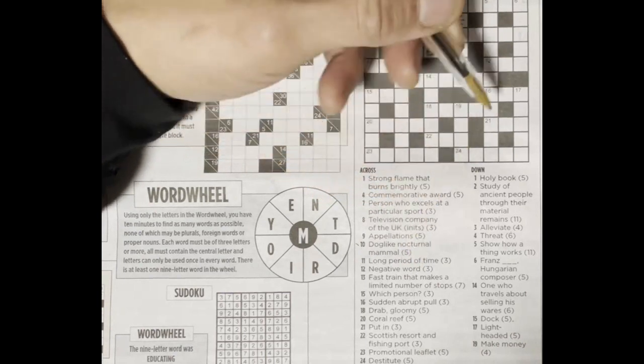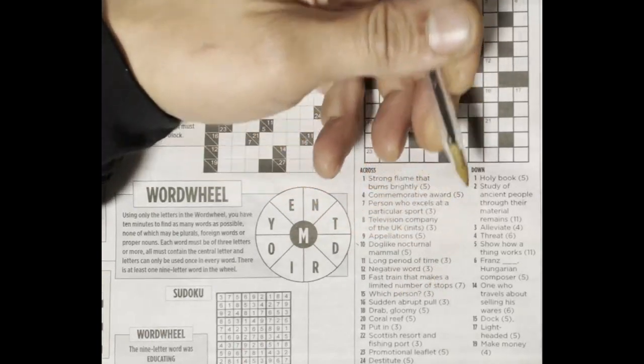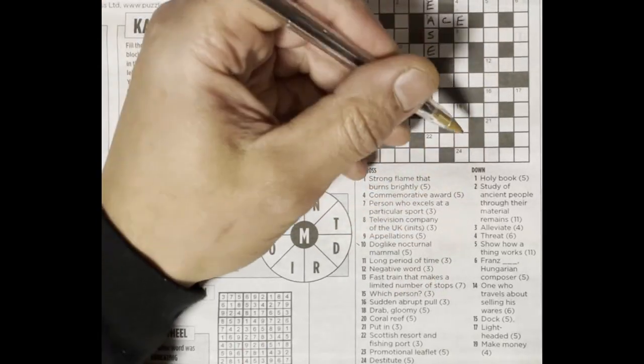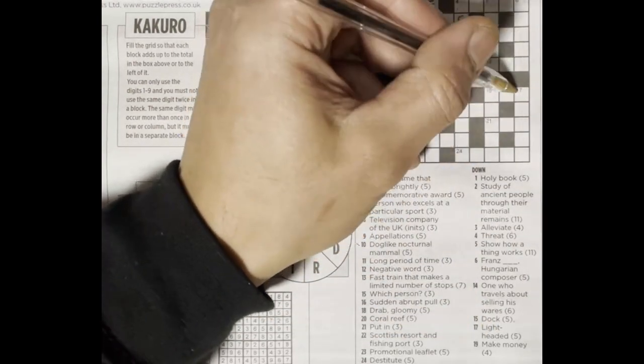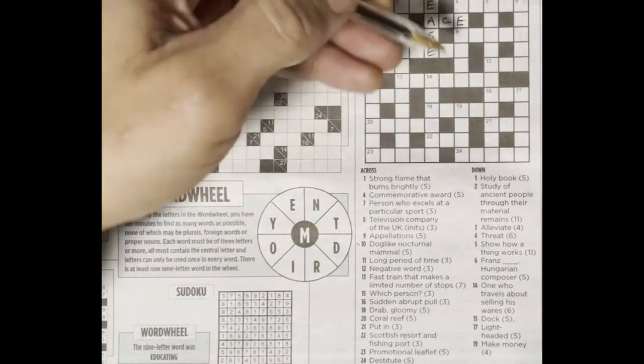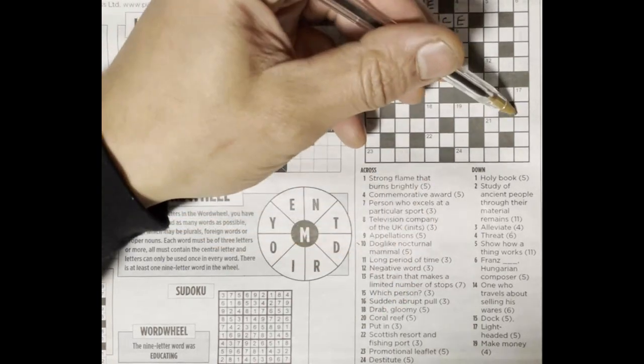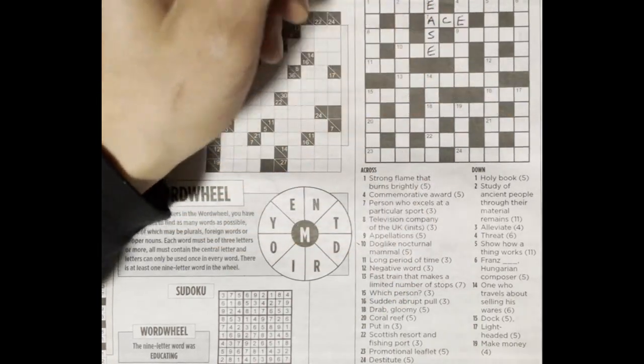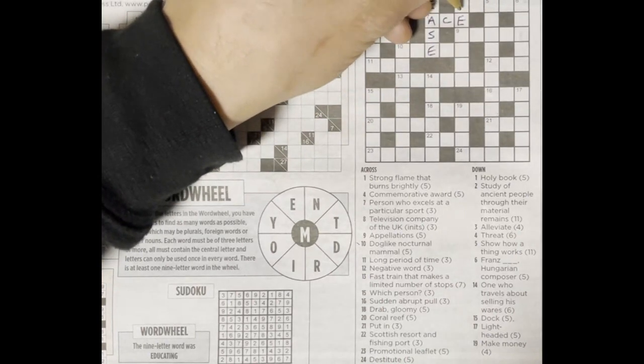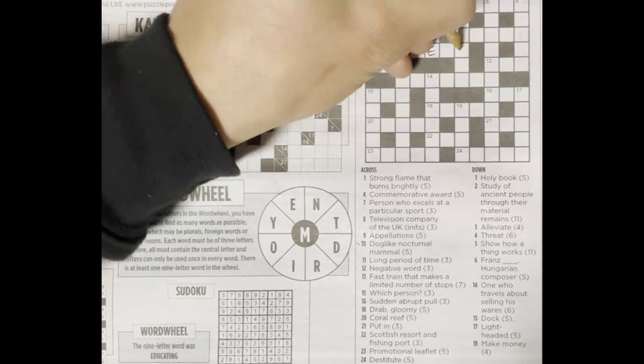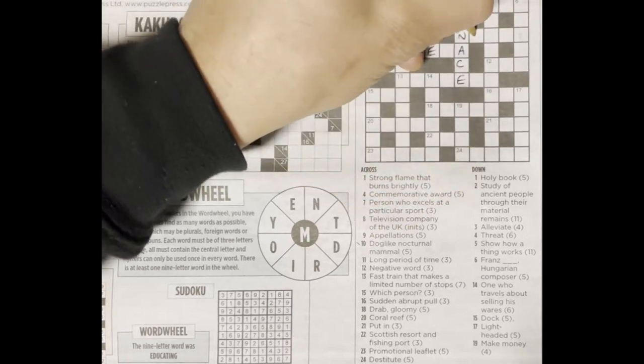Twelve across, negative word. Sixteen across, sudden abrupt pull, tug, T-U-G. Seventeen down, lightheaded, giddy. Could be sixteen across suddenly. So I like a challenge, yes. Let's put something. Threat, menace. Appalachian names.